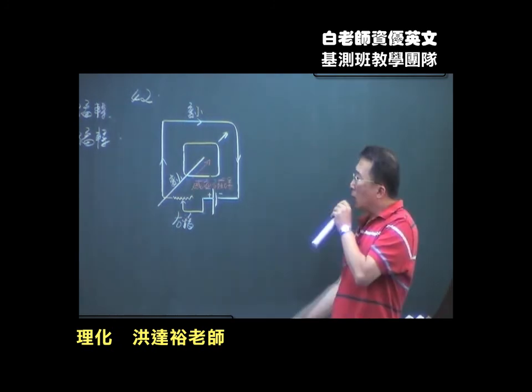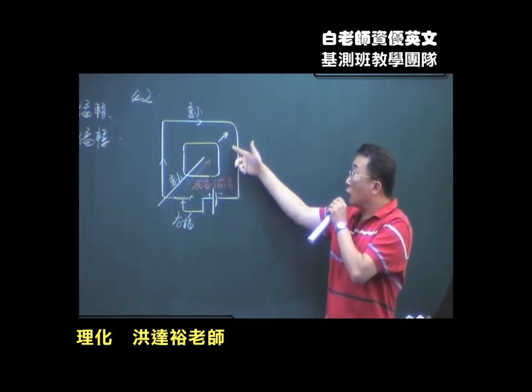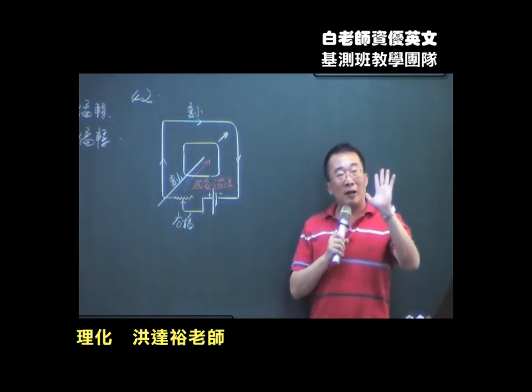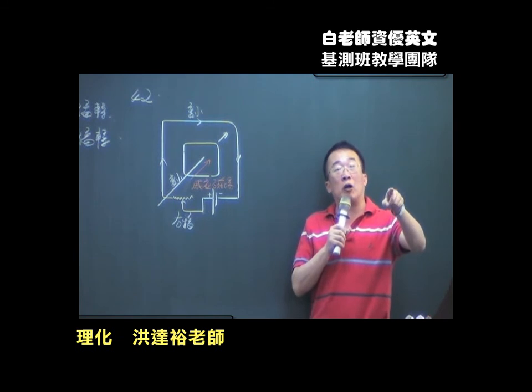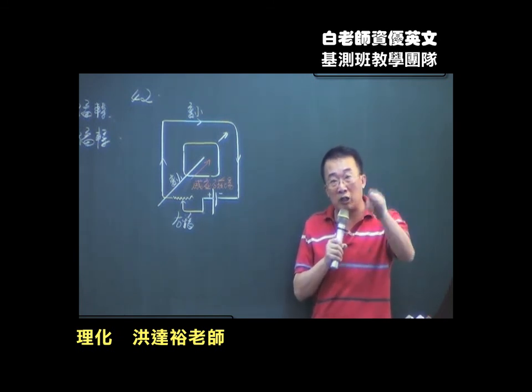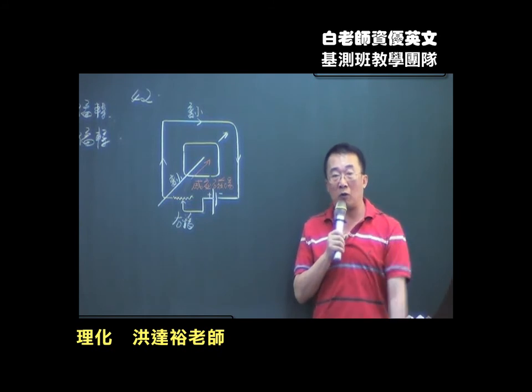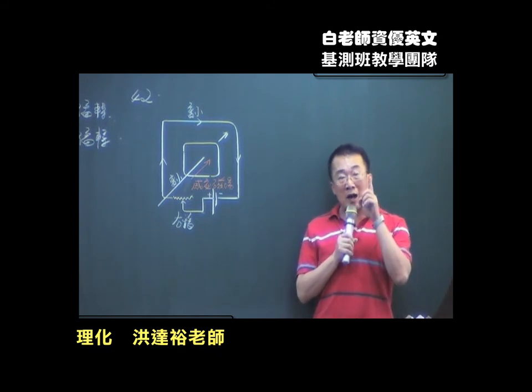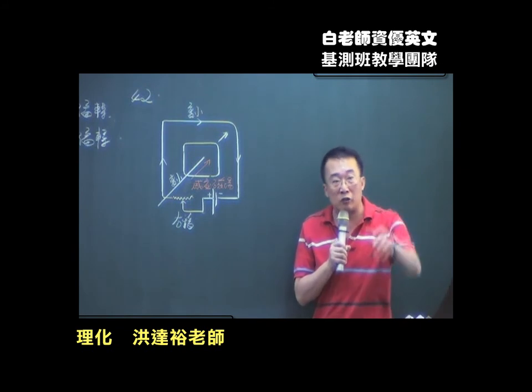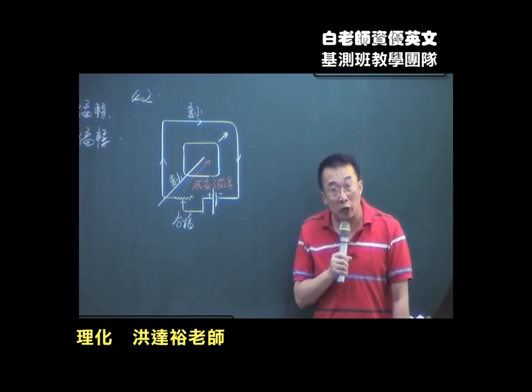你白磁场变小了是不是，感应磁场为什么跟白磁场同方向？因为你的白磁场给我变小，我就变小了。冷市老兄说，德国老冷市说，感应磁场的方向永远是抵抗外来磁场的变化方向。再一遍，感应磁场的方向永远是抵抗外来磁场的变化方向，你听懂吗？